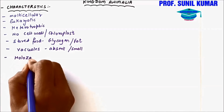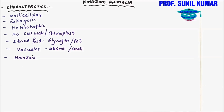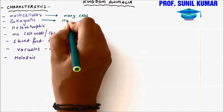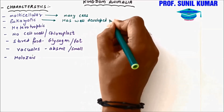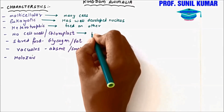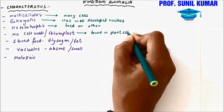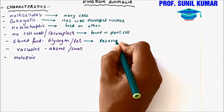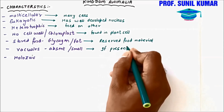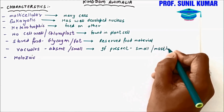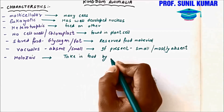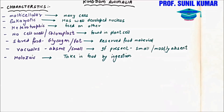They show holozoic mode of nutrition. Multicellular simply means they are made up of many cells. Eukaryotic means they have a well-developed nucleus. Heterotrophic means they are dependent on others — they can be herbivores, carnivores, or even omnivores. Cell wall and chloroplast are found in plant cells. Glycogen and fat are the reserve food materials. Vacuoles are basically absent, but if present they are very small. Holozoic mode of nutrition simply means they take in food by ingestion — they first take food through the mouth and then digest it.